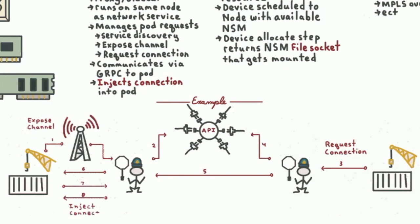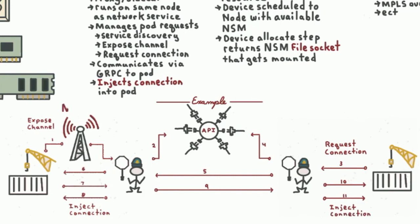This allows the pod the opportunity to refuse. If the pod accepts the connection, the NSM injects whatever interface — memif, vhost, etc. — into the pod. The NSM then accepts the connection to the originating NSM, which injects the interface — memif, vhost, whatever — into the requesting pod and tells it that its connection has been accepted.